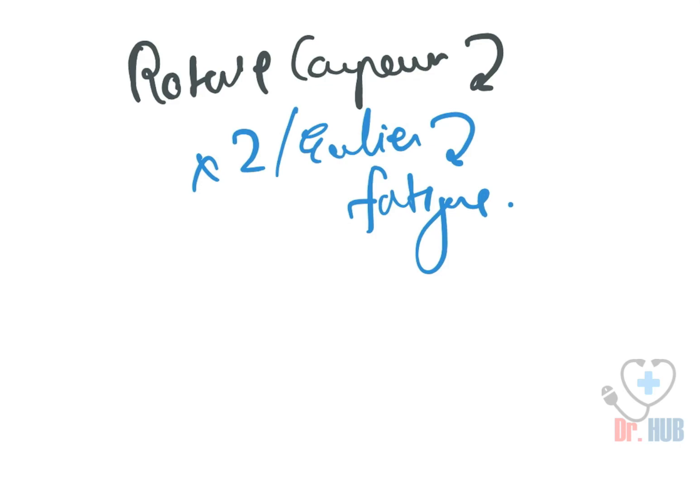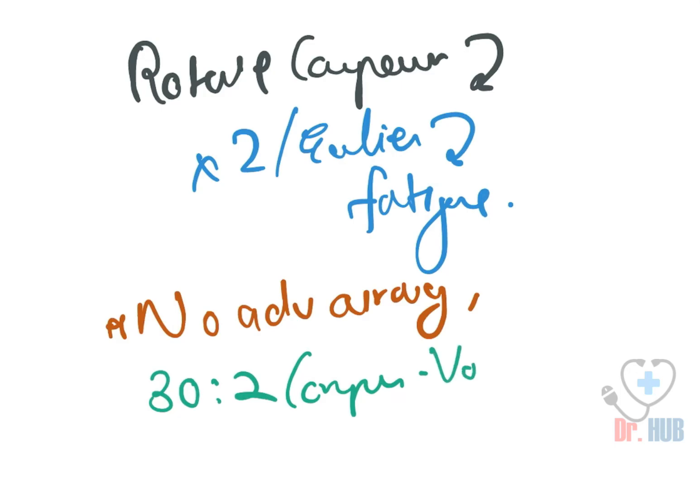Next one is if there is no advanced airway, in case there is no advanced airway, 30 is to 2 compression ventilation ratio is done.